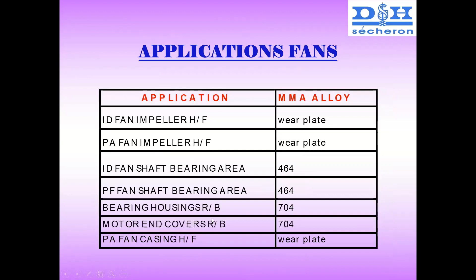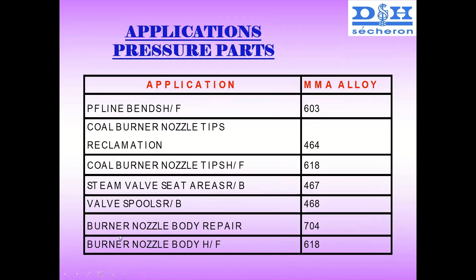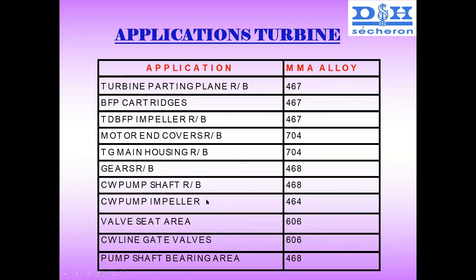We have seen a lot of fans where the fan impeller gets worn out. The best option is to put a wear plate on it, and we have supplied wear plates to fan applications in power plants. Pressure part coal burner nozzle tips hard facing is a very common application. Burner nozzle body repair and hard facing are also available. For turbine valve seat areas, the application normally uses stellite, and we have stellite available in both conventional and other ranges.